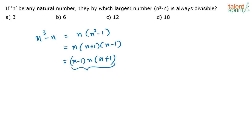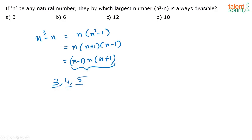Now what does this represent? This is nothing but the product of three consecutive numbers. It is given n is a natural number, so definitely it is 1, 2, 3, 4, 5, 6, etc. Now what can the numbers be? Either two numbers will be odd and one number will be even — for example 3, 4, 5 — or the other way: two numbers are even and the number in the middle is odd.